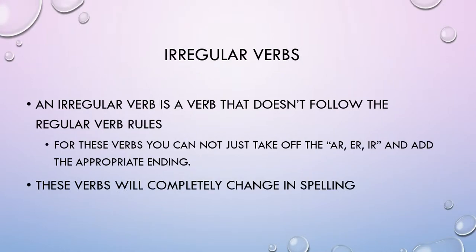First of all, an irregular verb is a verb that is not going to follow the regular verb rules. All that means is that for these verbs, I cannot just take off the ending and add an appropriate ending. These verbs are going to completely change in their spelling.